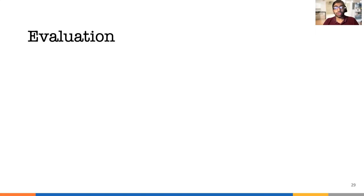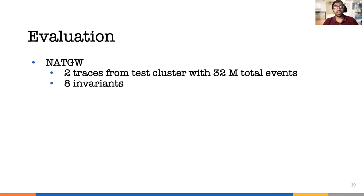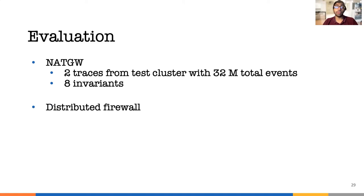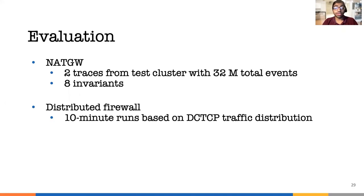For our evaluation, we take two traces of NatGateway from Azure cloud with more than 32 million events. They are taken before and after a bug was introduced. We verify eight invariants for the NatGateway. For the live traffic evaluation, we deploy Aragog alongside a distributed firewall. We run traffic based on DC-TCP traffic distribution for multiple 10-minute runs and check for three invariants in the distributed firewall.